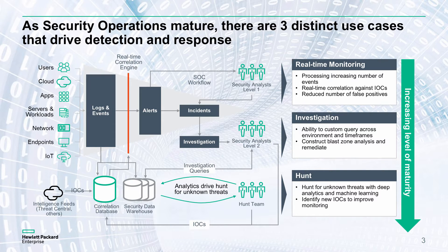As part of that initial triage, they're trying to identify whether this is real, accurate, and whether it needs to be investigated further or whether it can actually be closed then and there. We typically talk about that initial triage process carried out by level one security analysts occurring in three to five minutes, with correct contextual information presented to them as part of that correlation alert. They should be able to make a decision and ascertain whether it needs further investigation, whether it's a genuine real incident needing incident management, or whether they can do some basic investigation and close it.